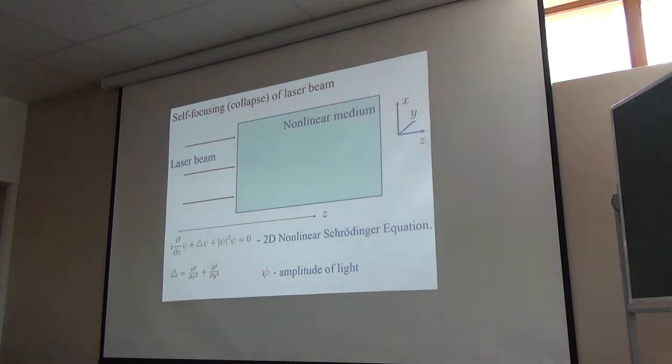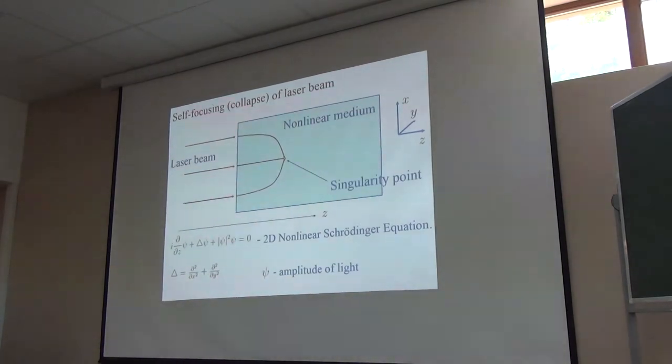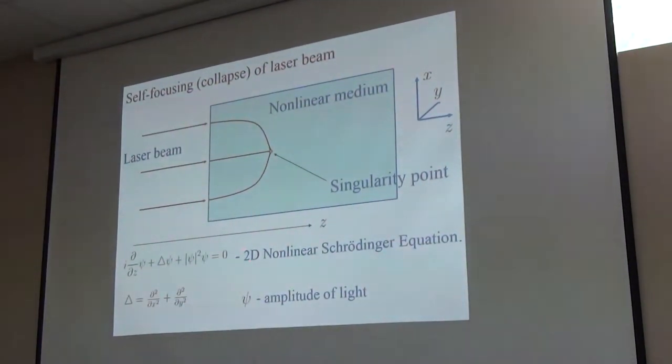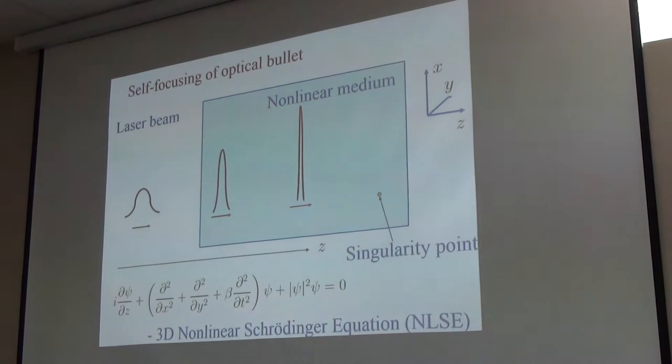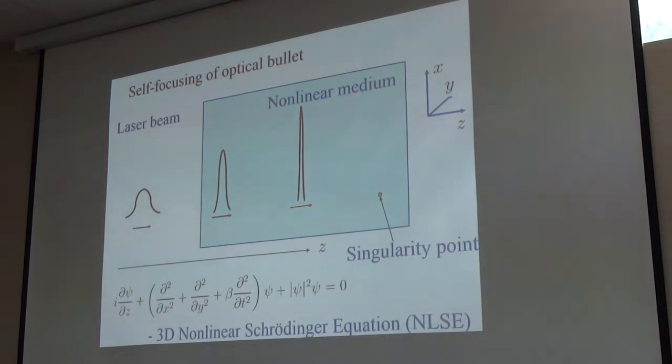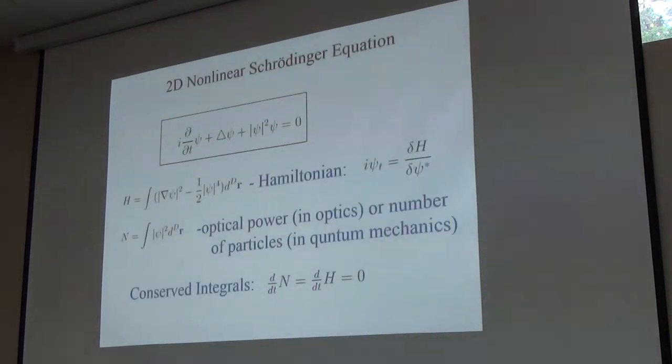Let me start from some general remarks about collapse. If you have a powerful laser beam entering nonlinear media, then because of nonlinearity it produces singularity at finite distance. This is the nonlinear Schrödinger equation which describes this behavior. In three dimensions we have qualitatively similar behavior if you have short laser beams, stretching not only in transverse directions x and y during propagation, but also shrinking in time. I will use t as an evolutional variable keeping in mind all applications.